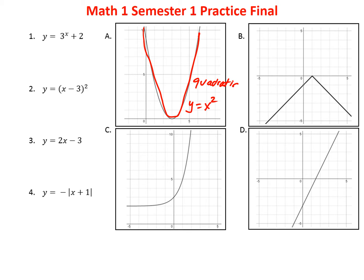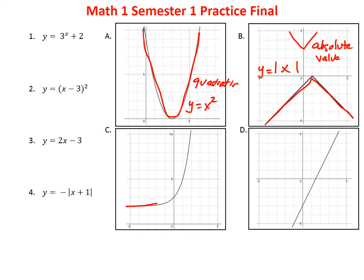The second one has a shape like a pyramid — you also see it sometimes upside down. This is our absolute value. It's usually designated with the absolute value markers — two brackets with something inside.